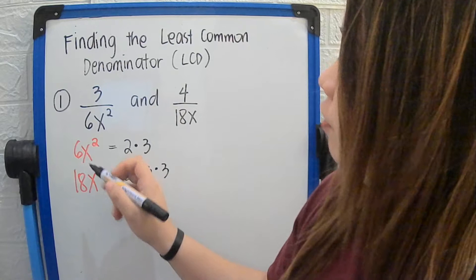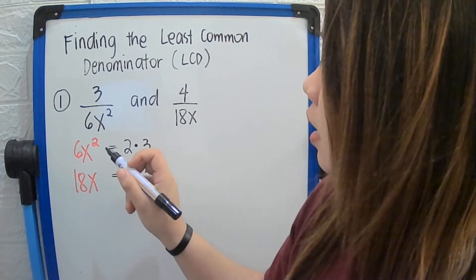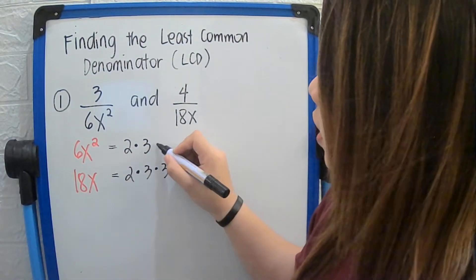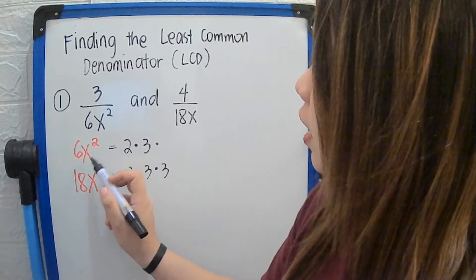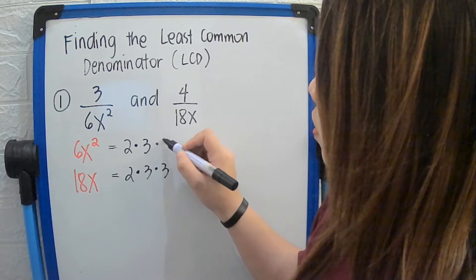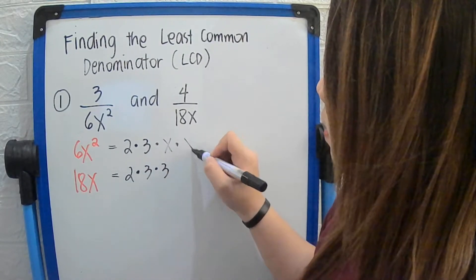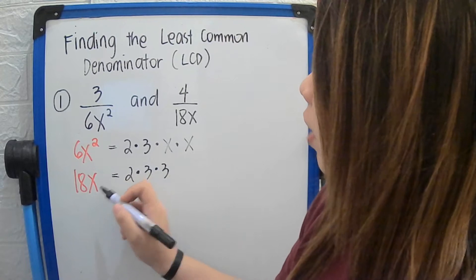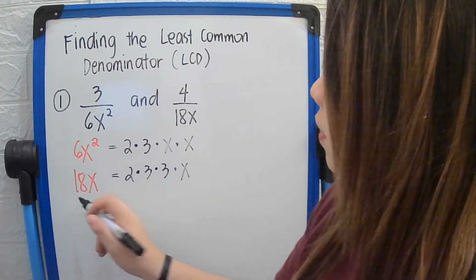For the variables, we have x squared and x. In the first denominator, we have 2 x's because the exponent is 2, so we have x multiplied by x. For the second denominator, we only have 1x, so we put x there.